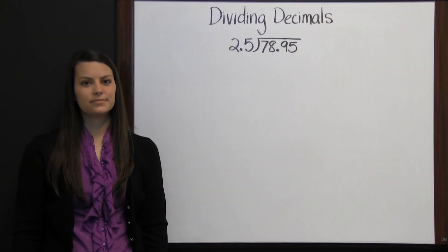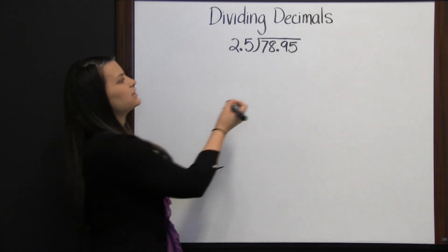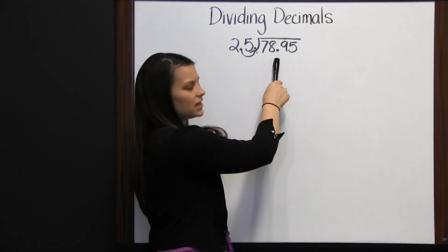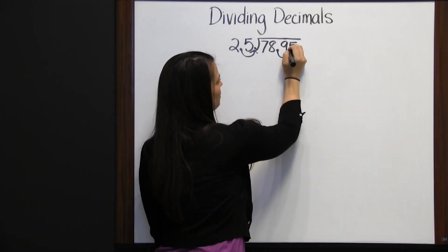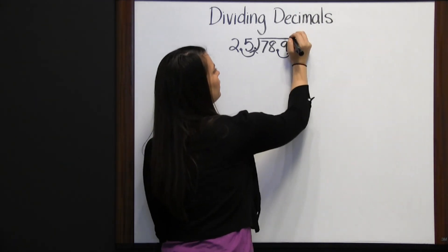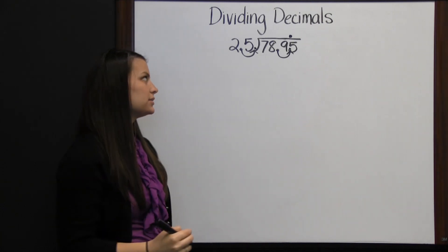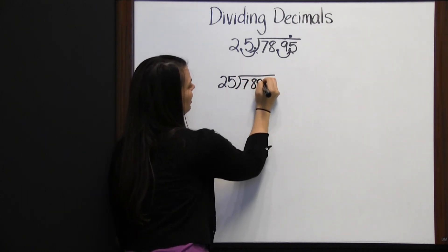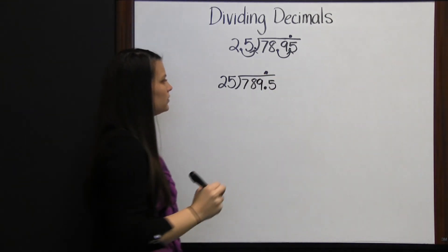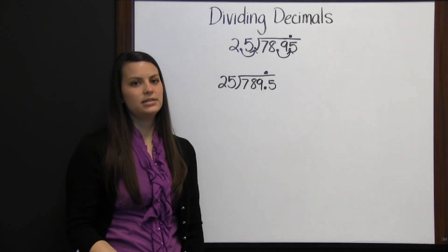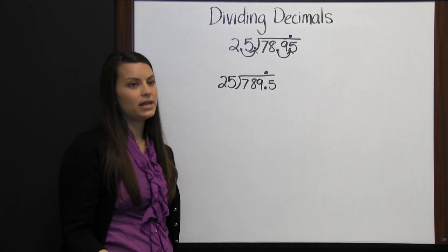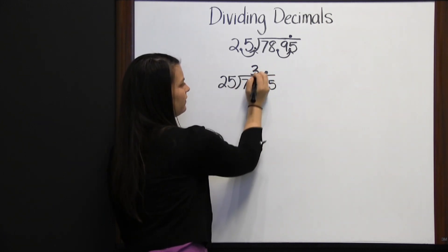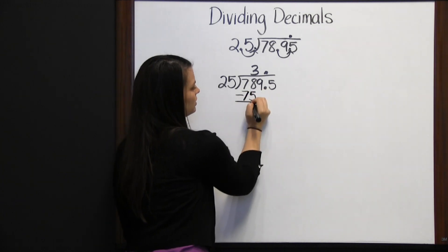Dividing decimals. To divide decimals, first move the decimal point in the divisor so that it's a whole number. Then move the decimal point in the dividend the same number of places. Finally, move the decimal point up so you know where it goes in your answer. This means we're dividing twenty-five into seven hundred eighty-nine and five tenths. Twenty-five goes into seventy-eight three times. Twenty-five times three is seventy-five. We subtract and get three, then bring down the nine.